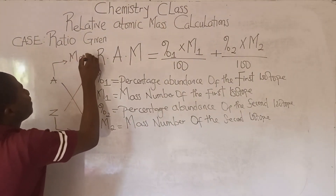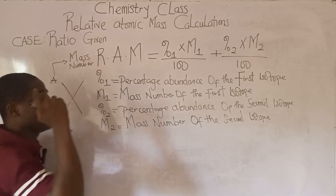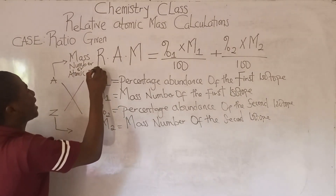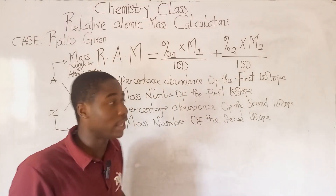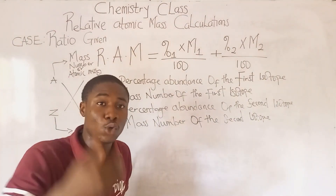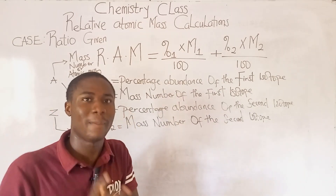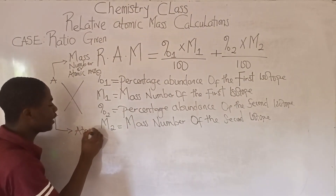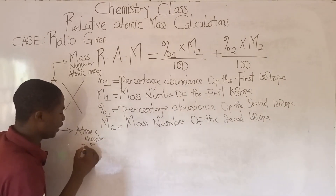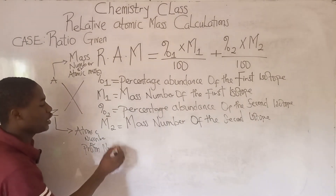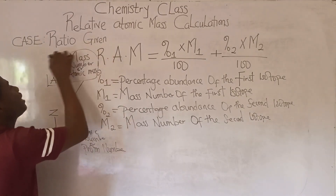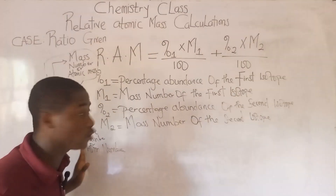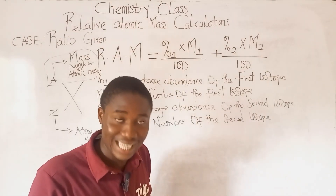The position labeled A is called the mass number, also called atomic mass or nuclear number. The position labeled Z is called the atomic number, also called the proton number. In the course of this lesson, the symbol we'll be focusing on is A, which is the mass number or atomic mass — not the atomic number.